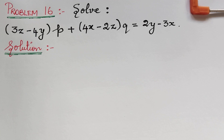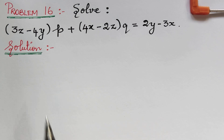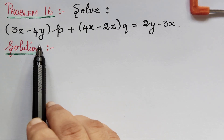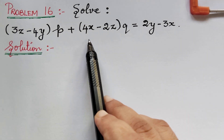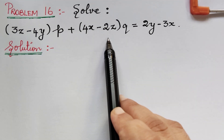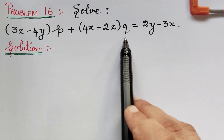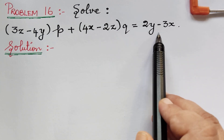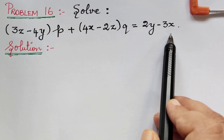Dear students, under the topic Lagrange's partial differential equations, here we have problem 16 under method of multipliers. The question is: (3z - 4y)p + (4x - 2z)q = 2y - 3x.